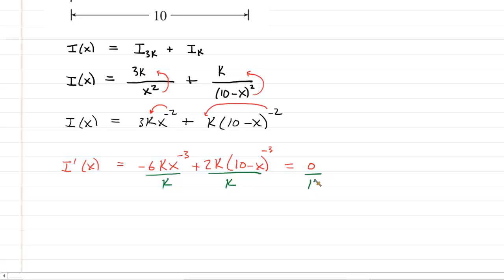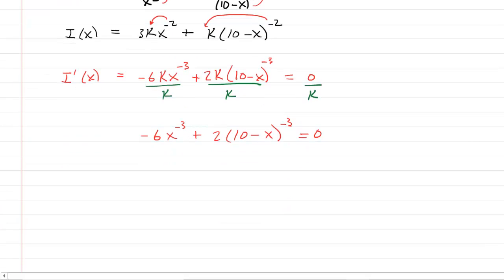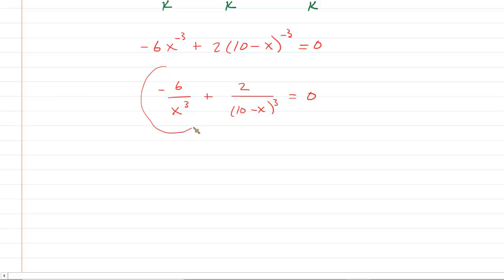Technically you have to divide the right side by K as well, but that's going to maintain 0 there. So you're going to have negative 6X to the negative 3 plus 2, 10 minus X to the negative 3. This is still equal to 0. Solving this is going to be a very enjoyable experience. Why don't we rewrite this as negative 6 over X cubed plus 2 over 10 minus X cubed. We could then add this term to the other side. Notice it's a minus 6 over X cubed. So you'd add it to the other side. This gives you 2 over 10 minus X cubed is equal to 6 over X cubed.